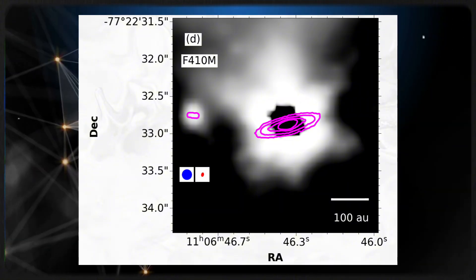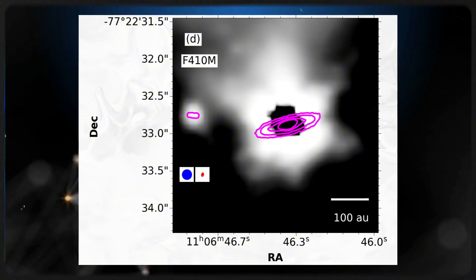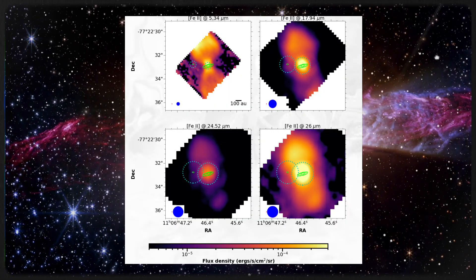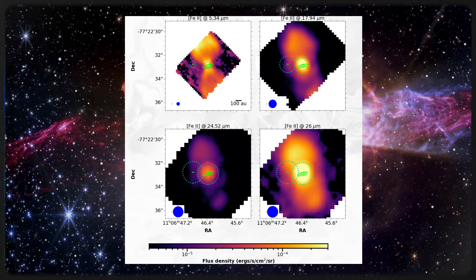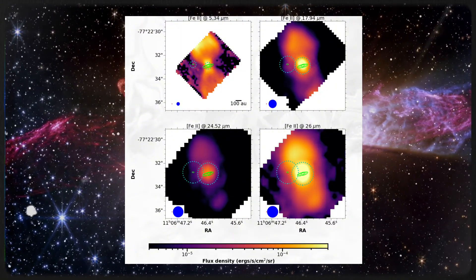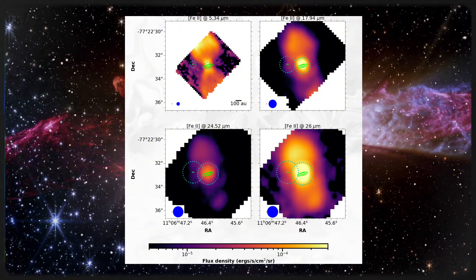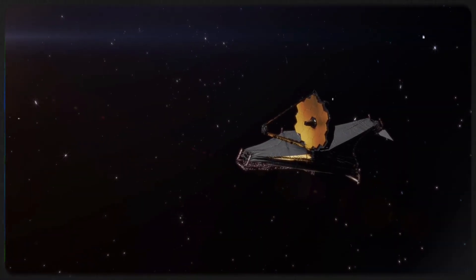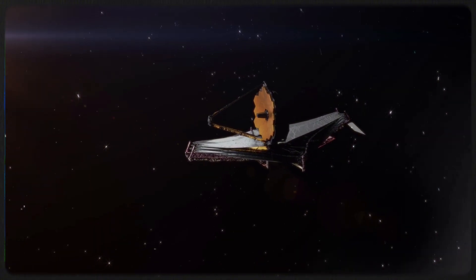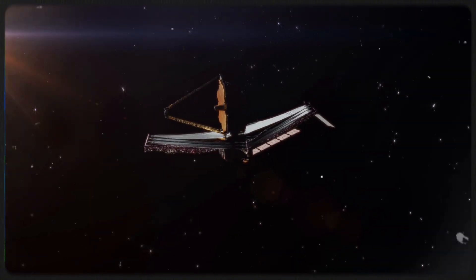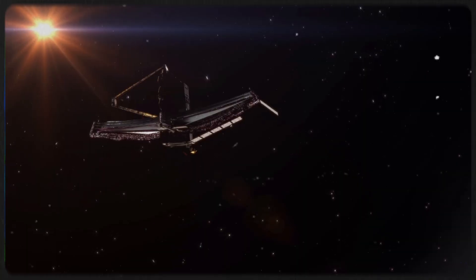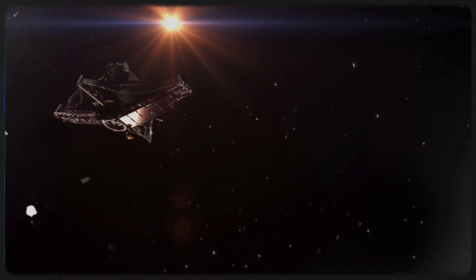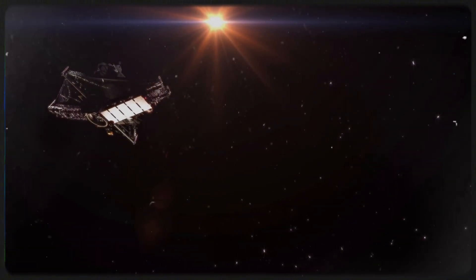This protostar is in what's called the Class I phase of its evolution, which means it's relatively young, only tens of thousands to a few million years old. Class I protostars, like Cedar Blad 110 IRS-4, are still gathering mass and often have surrounding discs of material that are slowly falling inward, feeding the developing star. Webb's instruments, NIRCAM and MIRI, have recently provided valuable insights into the chemical makeup of this protostar's icy surroundings, cataloging the composition of its material. These observations allow scientists to piece together the complex processes that are taking place as this young star grows and matures.